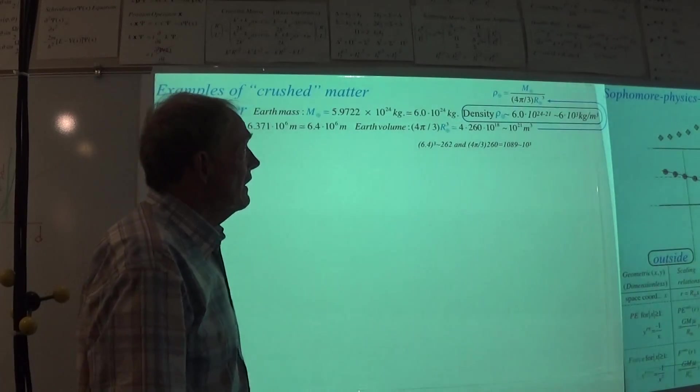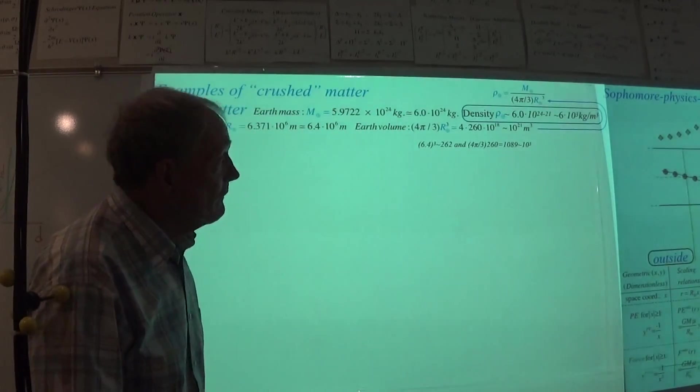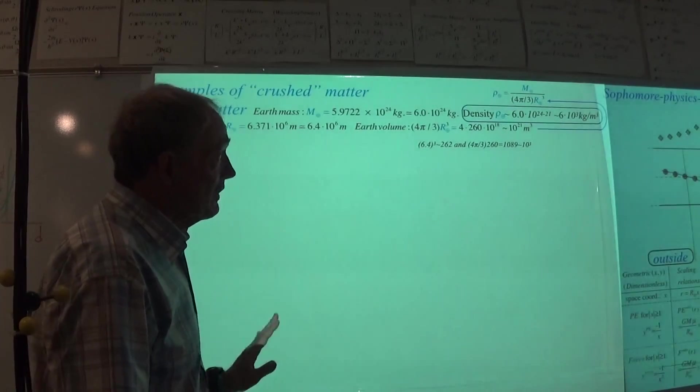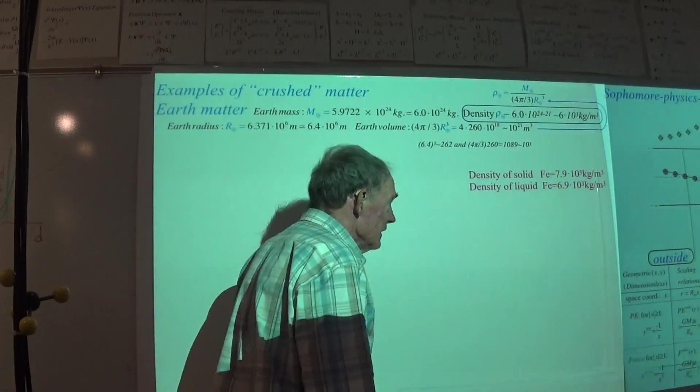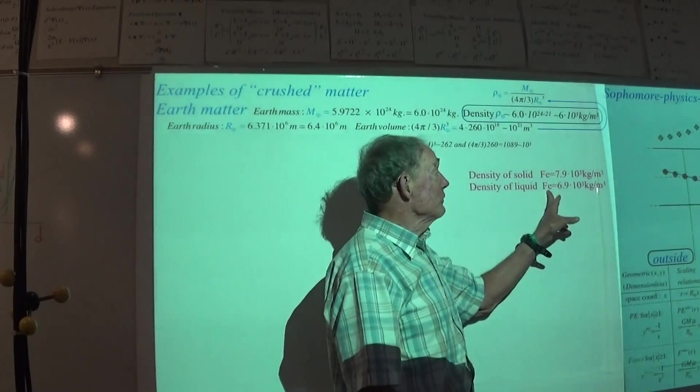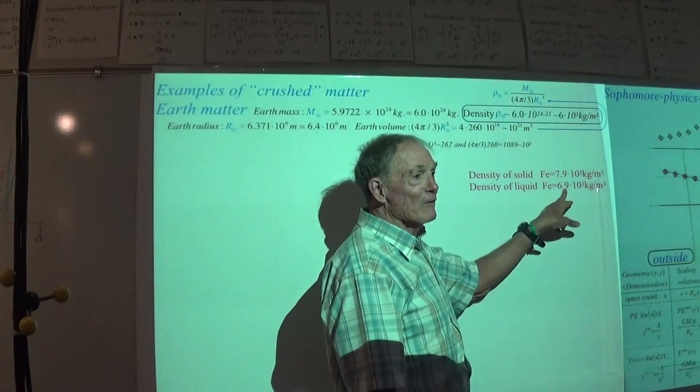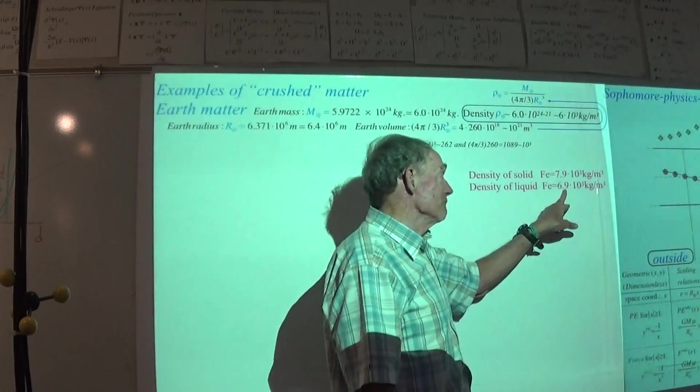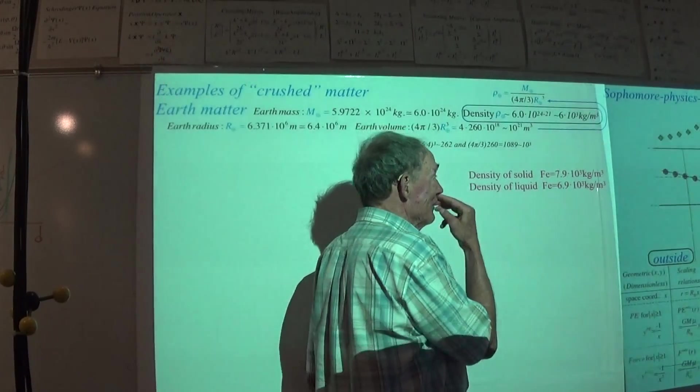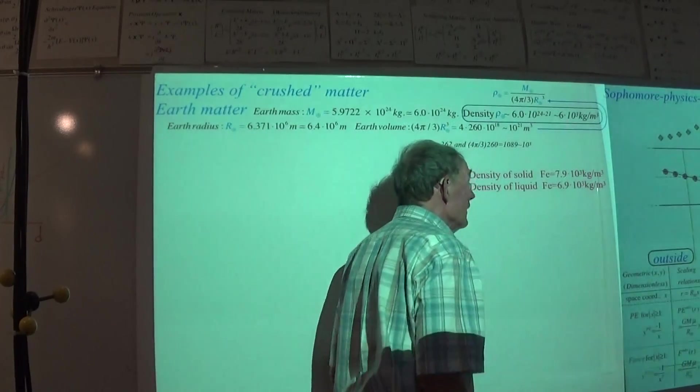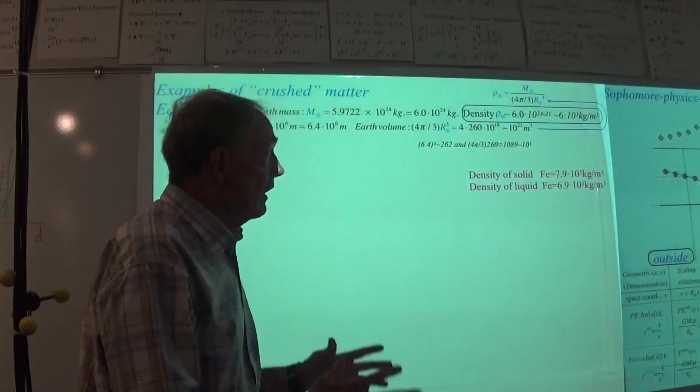And we've got that many kilograms, so we're talking about a density of around 6 times 10 to the 3rd kilograms per cubic meter. That's for the sophomore physics earth, assuming it was constant density throughout, which it is not. But it isn't too far from the density of liquid iron, which is quite different from solid iron. There we go, right? We've got about one figure accuracy, right? But we'll take anything at this point, because, boy, there's a lot going on inside the earth.